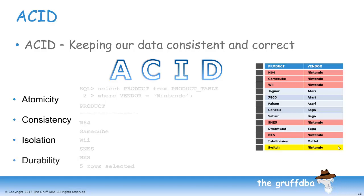And lastly, D is for Durability. Durability simply means that when records are added, updated, or deleted from the database, they stay that way. They don't magically come back on their own or mysteriously vanish for no reason. Oracle uses the redo logs to ensure committed transactions stay committed even after there is a failure in the database or the hardware it runs on.